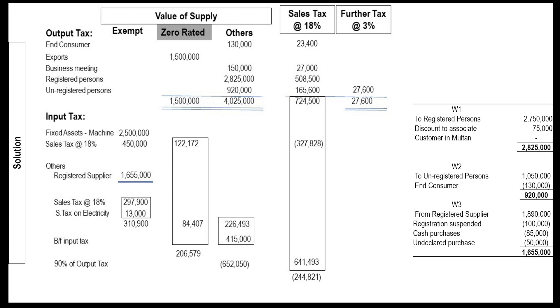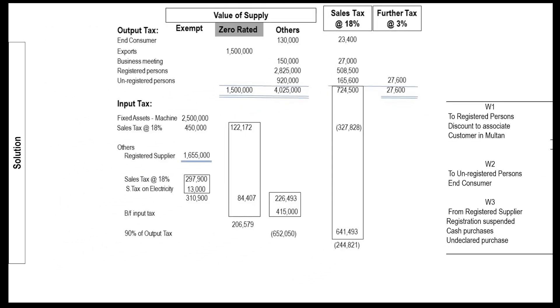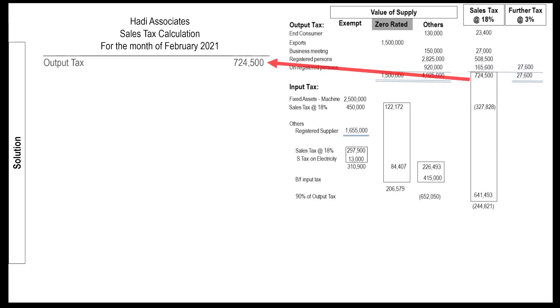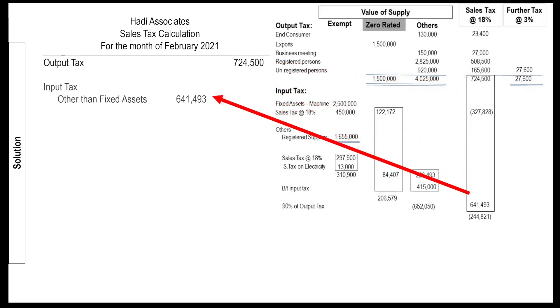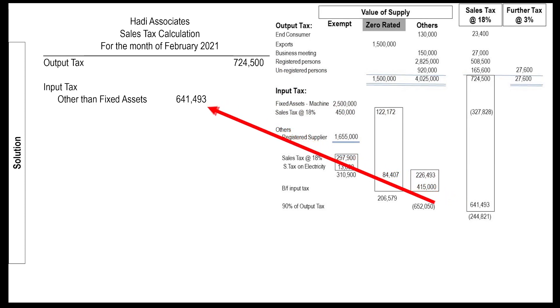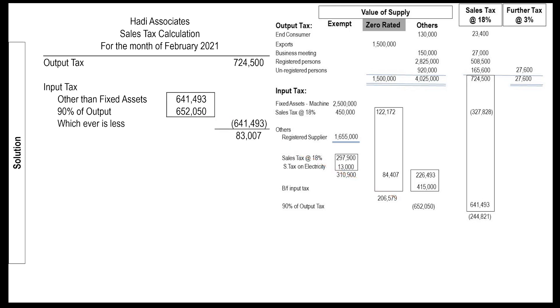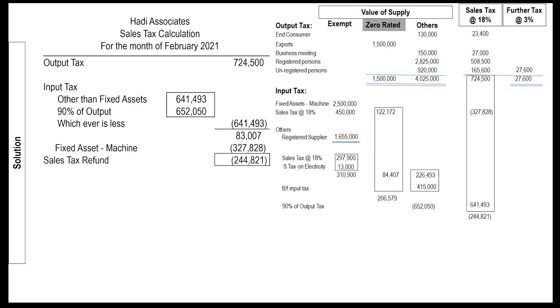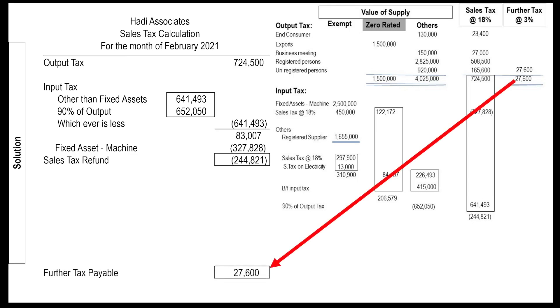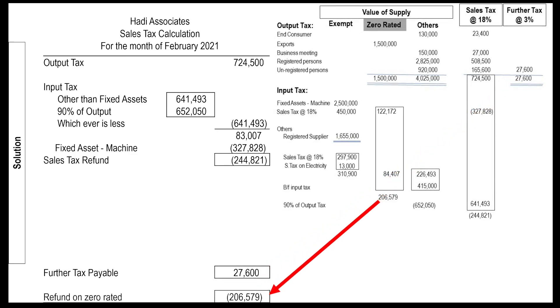Our working is complete now, but we have to present it in an organized form. Let's do the cosmetic work. Mention the heading stating the name and tax period. Mention output tax. Mention input tax other than fixed assets, and mention 90% of output tax. Mention the lesser amount and deduct it from output tax. Deduct input tax on fixed assets and mention the refund amount. Some input tax will be carried forward — this will be worked out from the difference of these figures. Mention further tax payable and mention the refund on zero-rated items.